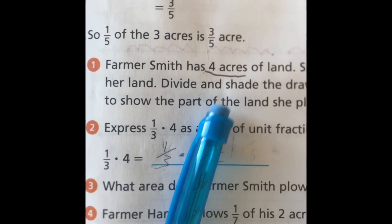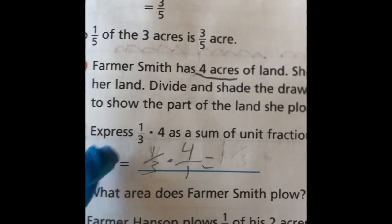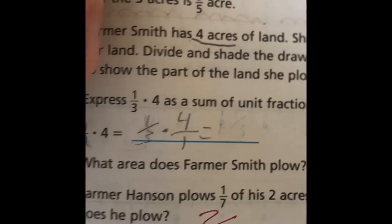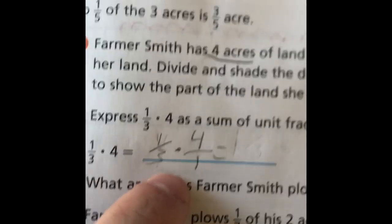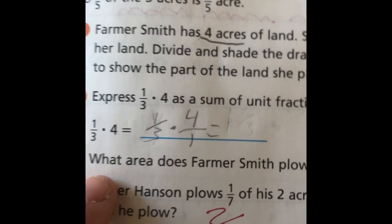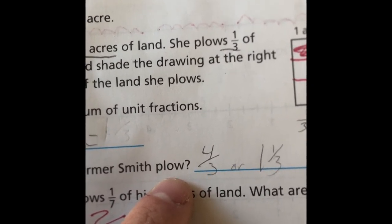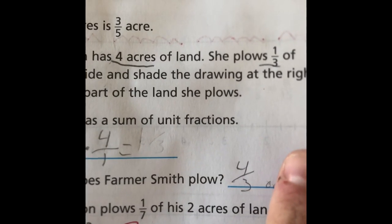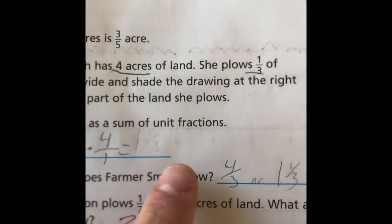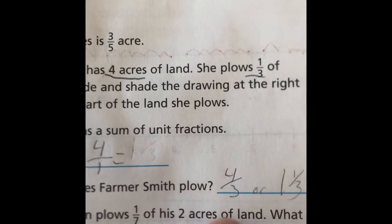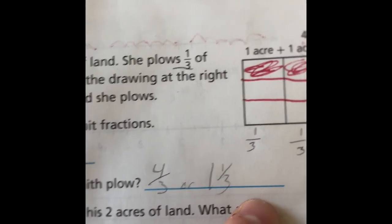How would we express this problem as a sum of unit fractions? We would write it up with one-third, and the denominator for four would be one, because any time it's a whole number, you just put one underneath it. So what area does Farmer Smith plow? Yes, it would be four-thirds, which what would that be simplified? Yes, that would be one and one-third. You would carry over the three-thirds, which you already have one, and then you would have one left over. So you would have one whole acre and a third of another plowed.